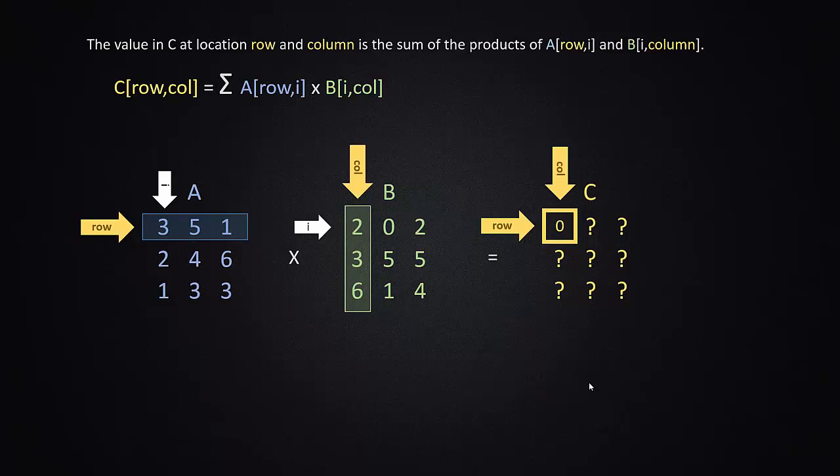So we're going to modify that definition slightly and we're going to say that the value at C row comma column is actually equal to the sum of the products of A row comma i times B i comma column. So what that really means is A row i means one of the elements in this row, the first element in this row times the first element in this column. And then the sum means we have to go back and change i and add it to the current value. So we would take 3 times 2 and then we would increment i by 1 and we would get 5 times 3 and increment i by 1 and we'd get 1 times 6 and each time through we would add that up. So let's see how that works.